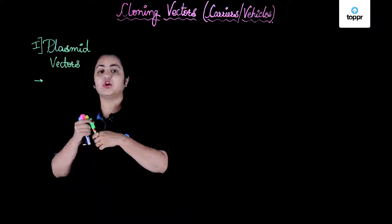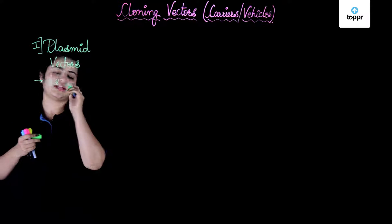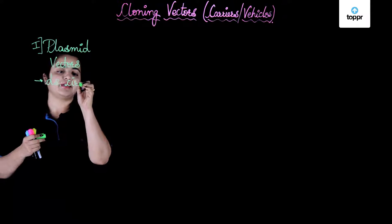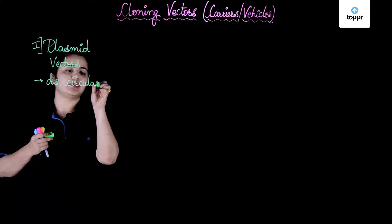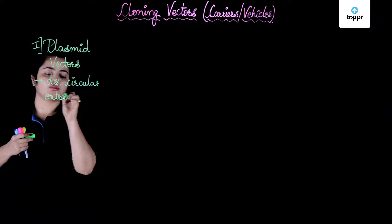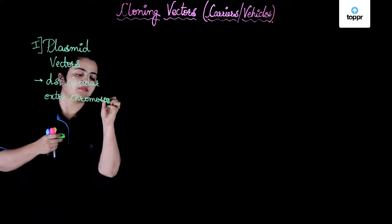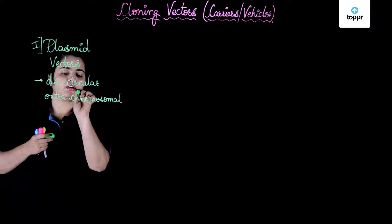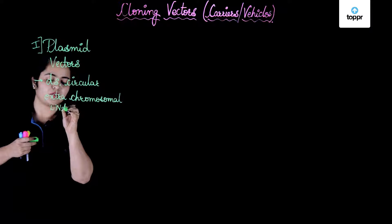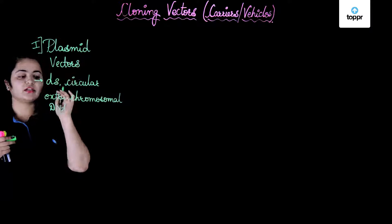So ye plasmid vectors usually hote hai kaise? They are double-stranded. Yes, DNA hai, toh circular double-stranded hoote hai. Circular hoote hai. Yes, double-stranded, circular, extra-chromosomal DNA. This is what the plasmid vectors will be.